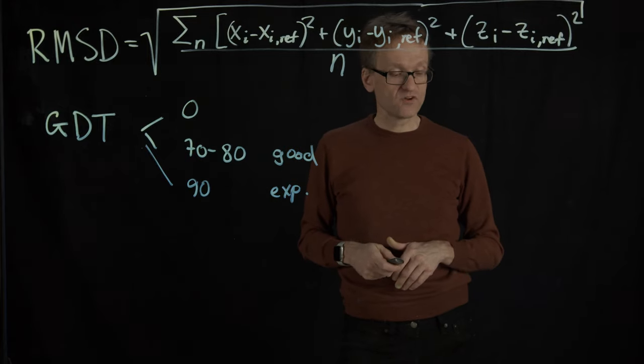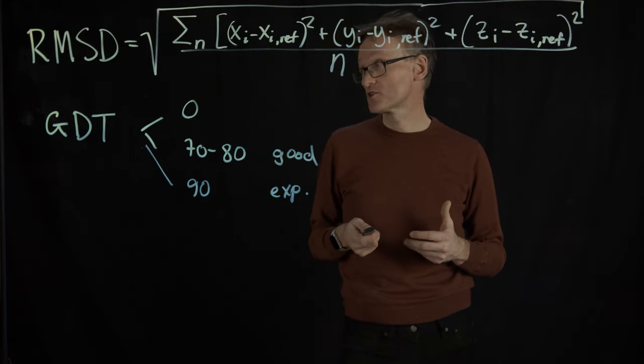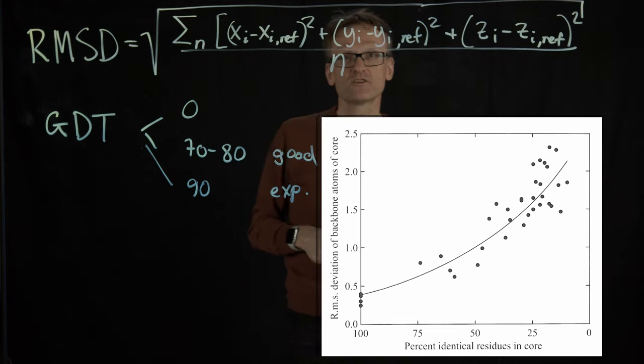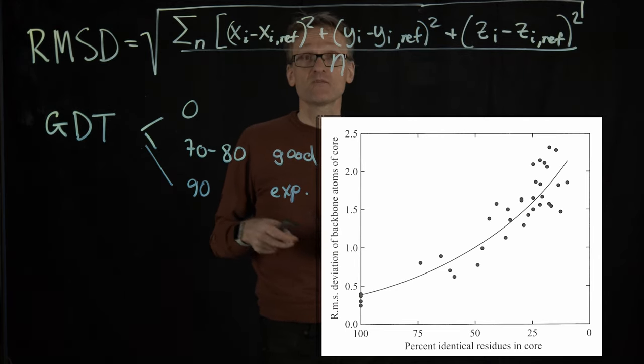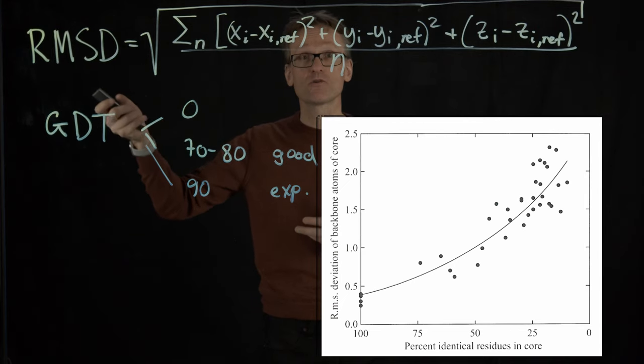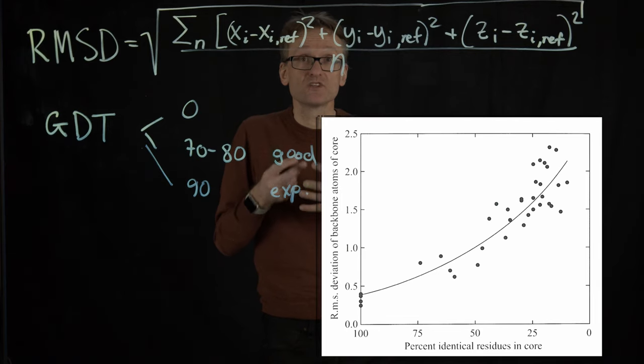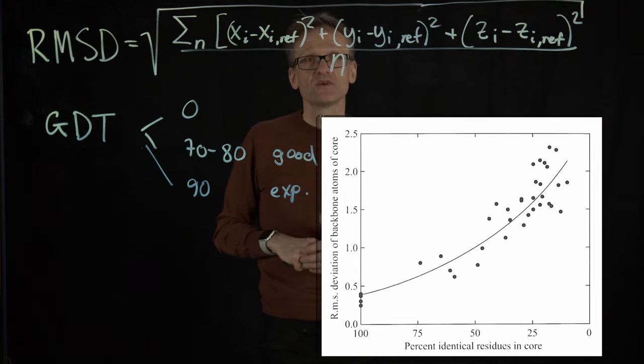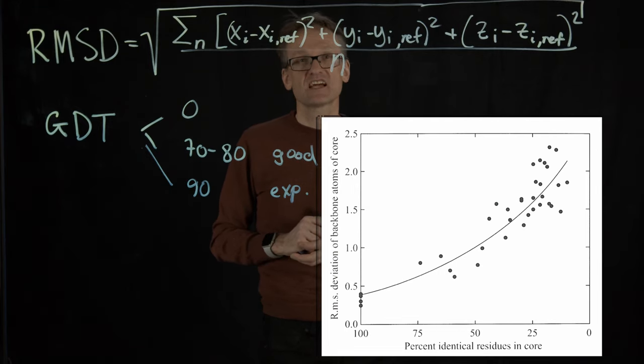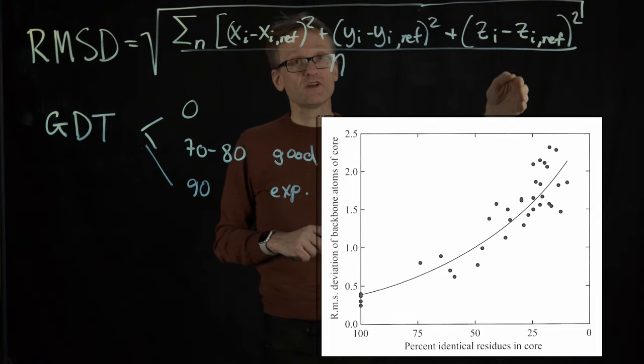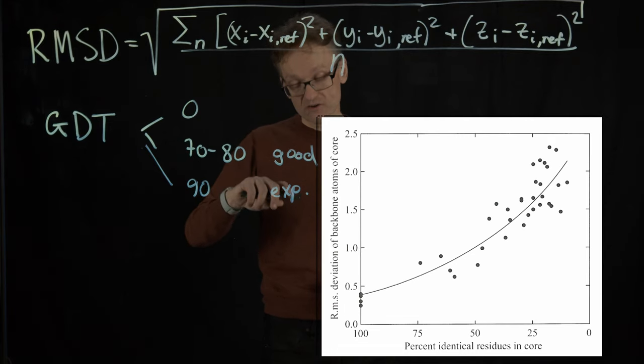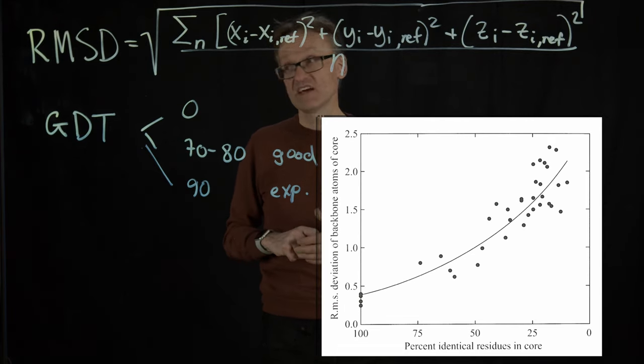So if we plot the expected sequence conservation versus the RMSD, it turns out that if I'm at 100% sequence identity the RMSD should be zero, right. But already when I have say 75% of the residues in the core of the protein identical, I should expect this RMSD to be in the order of 0.5. So if only 25% of the residues differ, it's exactly the same structure. And then this will of course go up. But even if only 25% of my structures match, I actually expect on average to be within 1.5 angstrom RMSD.